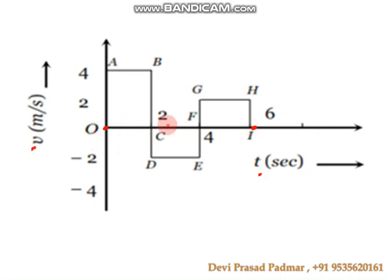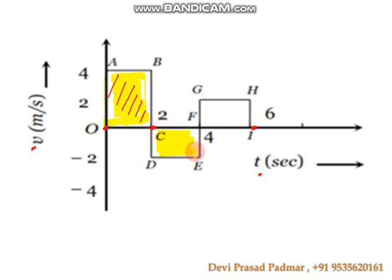We divide the area into three parts. From 0 to 2 seconds, we consider the rectangle AB. From 2 to 4 seconds, we consider the next shape. From 4 to 6 seconds, we consider the third shape. The total area under the VT graph is nothing but the displacement.